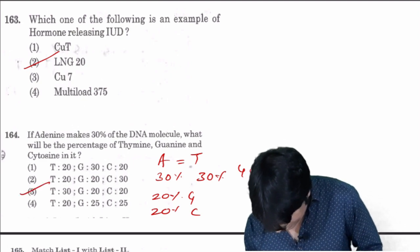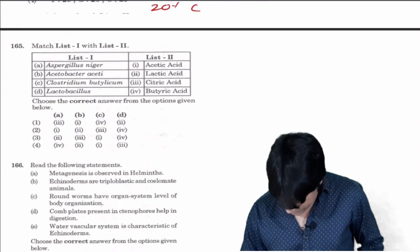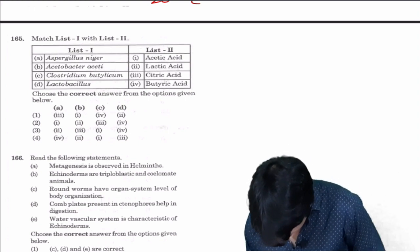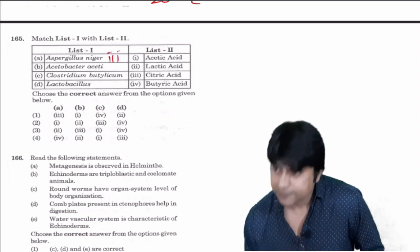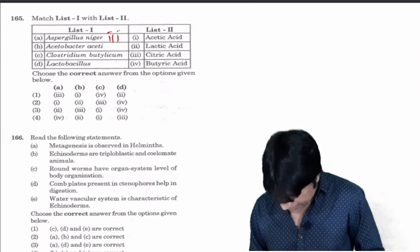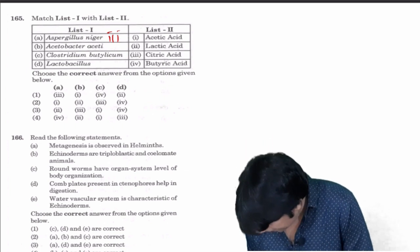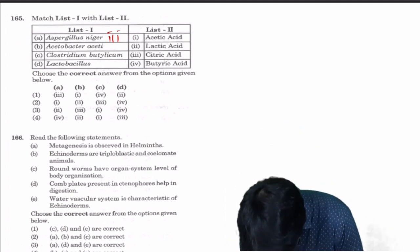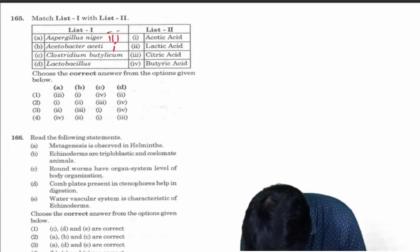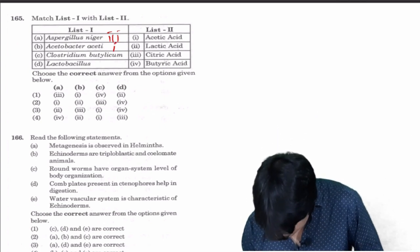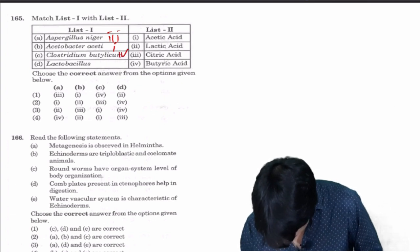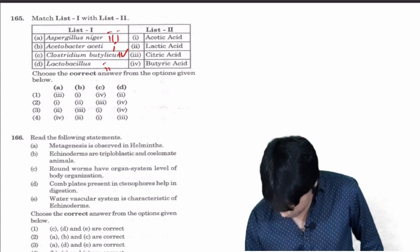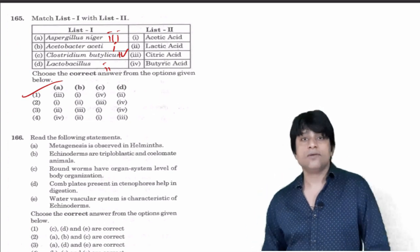Thymine is 30 percent and guanine and cytosine are 20 percent each, so your answer is three. Next, Aspergillus niger is for citric acid, three. Acetobacter acetic acid is one. Clostridium botulinum is butyric acid, it is four. Lactobacillus is lactic acid, it is two. So find out 3, 1, 4, 2, this is answer one.